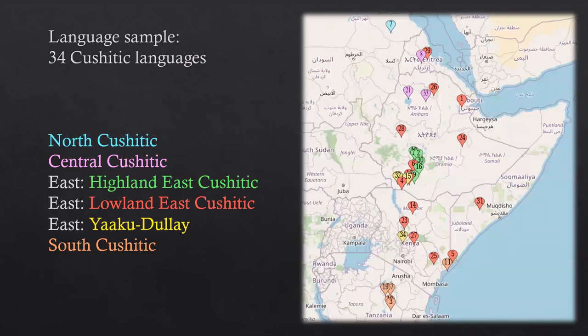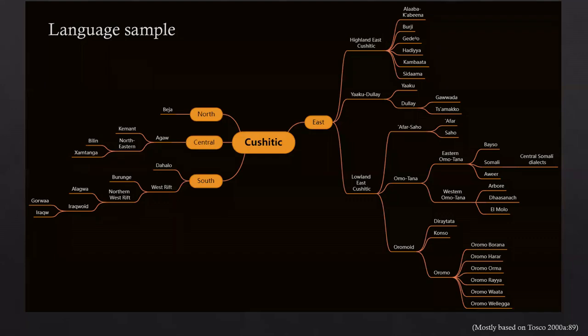This sample includes 34 languages, spread from Sudan all the way to Tanzania. At the top you see North Cushitic in blue, Central Cushitic in purple in Eritrea and north of Ethiopia. Then East Cushitic is divided into three branches: Highland Cushitic in green, Lowland Cushitic — way more widespread — in yellow, and South Cushitic in Kenya and Tanzania in orange. This is a possible classification based roughly on Tosco 2000, which only includes the 34 languages I'm working on.